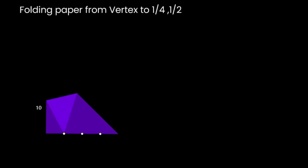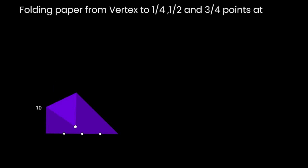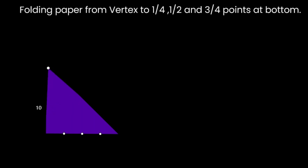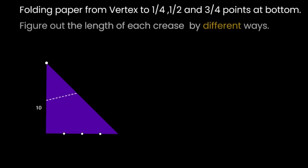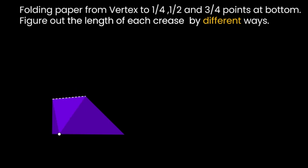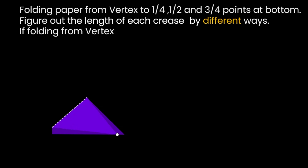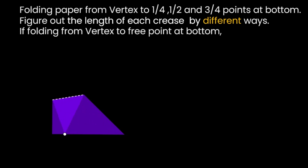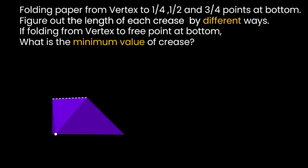Folding the paper from the vertex to the one-quarter, one-half, and three-quarters points at the bottom — what are the lengths of these three creases? Let's try to figure out the length of the crease in different ways. Additional challenge problem: if folding paper from the vertex to any point at the bottom, what is the minimum value of the crease?